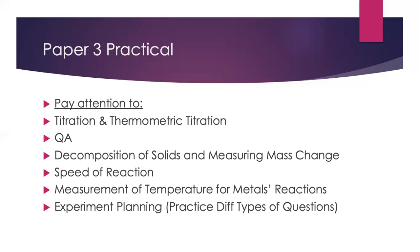Remember the sources of error, how to improve the experiment procedure by correcting or eliminating the source of error, and understand how each source of error affects the result. Refer to my experiment planning video, where I classify experiment planning into Type A and Type B and discuss sources of error. Measurement of temperature of a reaction method is also very popular and has come out several times. Practice as many different types of experiment planning questions as you can — we never know what will come up, but one of them will come out, so drill yourself until you are familiar.